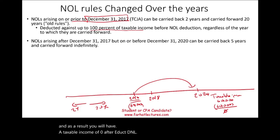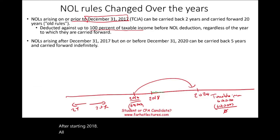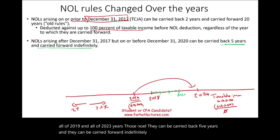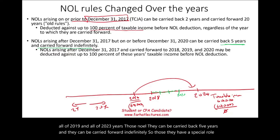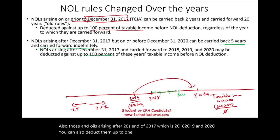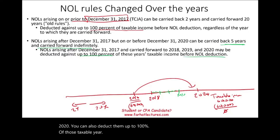For NOL arising after December 31st, 2017 — specifically all of 2018, 2019, and 2020 — those NOLs can be carried back five years and carried forward indefinitely. Those years have a special rule. Also, NOLs arising from 2018, 2019, and 2020 can be deducted up to 100% of taxable income in those years before the NOL deduction.